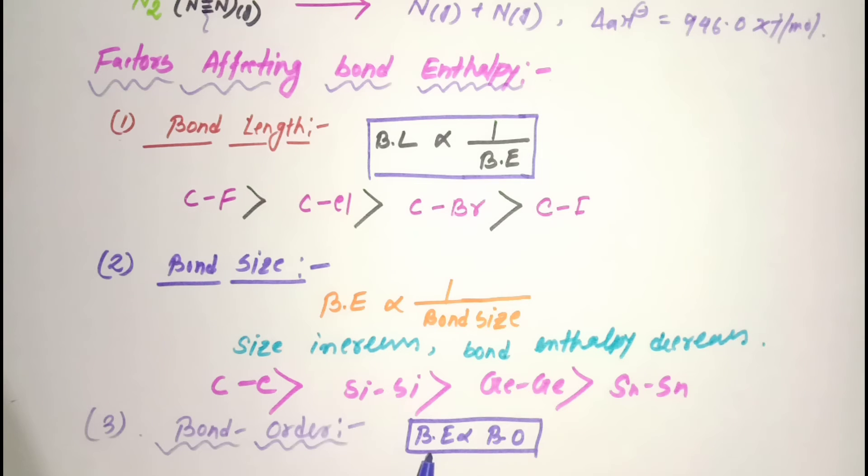The third factor is bond order. The relationship is: bond enthalpy is directly proportional to bond order. Bond order means how many bonds are combined together in a molecule, or simply how many electron pairs are shared.